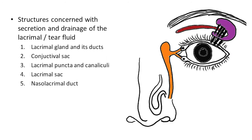First we will start with the lacrimal apparatus. So what is the lacrimal apparatus? Lacrimal apparatus denotes the structures concerned with secretion and drainage of lacrimal or tear fluid. It includes the lacrimal gland and its ducts, conjunctival sac, lacrimal puncta and canaliculi, lacrimal sac, and nasolacrimal duct. These structures together are termed lacrimal apparatus because they are concerned with secretion and drainage of lacrimal fluid, which is colloquially called tears. We will see the anatomy of these structures one by one.